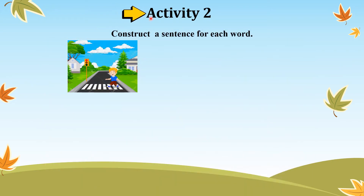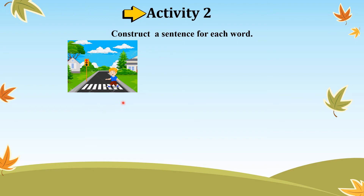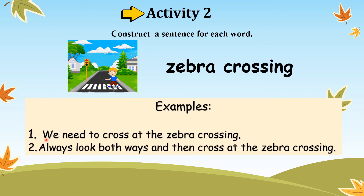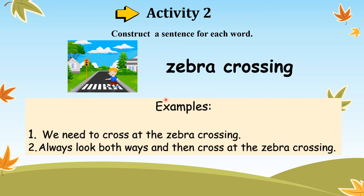Now let's proceed with activity 2. You need to construct a sentence for each word. So for the exercise you did in activity 1, you are going to use each word to construct a sentence. What do we call this thing? Well done! This is a zebra crossing. Your task is to construct a sentence using the word 'zebra crossing.' Here are some examples: 'We need to cross at the zebra crossing.' 'Always look both ways and then cross at the zebra crossing.'